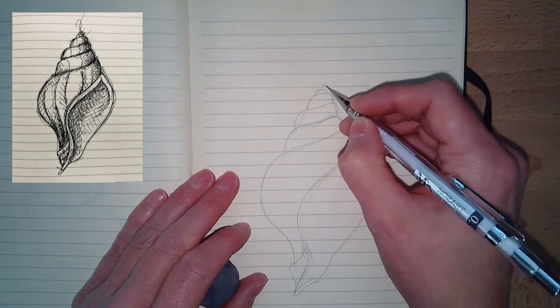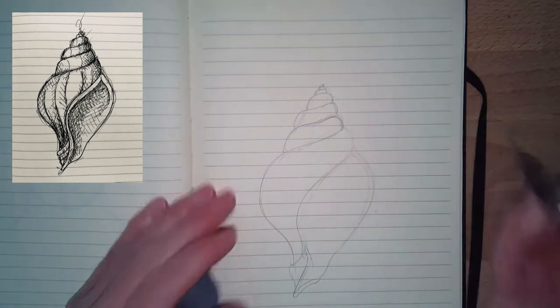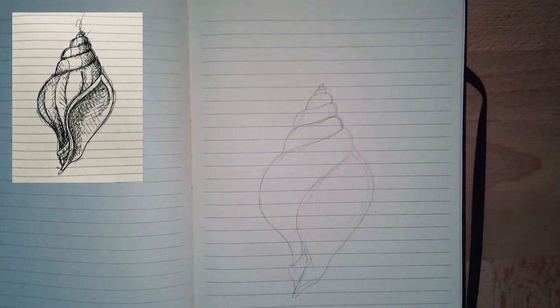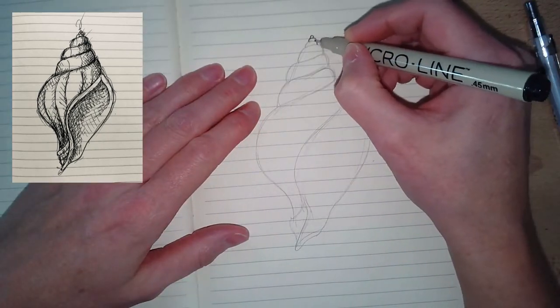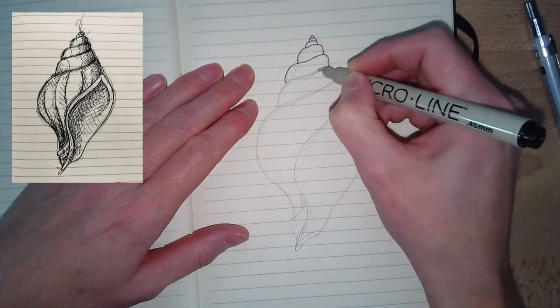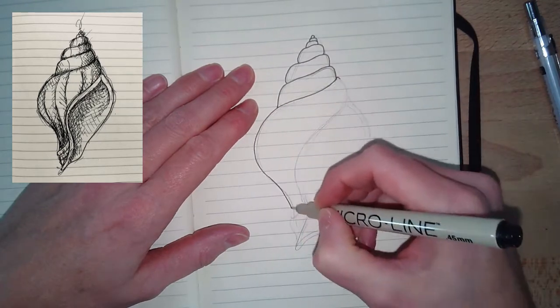Then I'm just going to soften up those edges, and make sure I have this angle that goes from the top right curves down to the left. Once I'm happy with the shape, I'm going to go through and ink it.